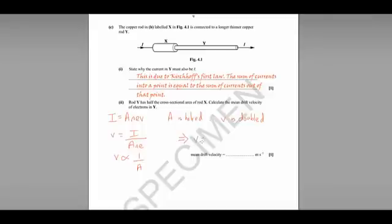So V equals double our previous answer, which is 5.4 times 10 to the minus 5 meters per second.